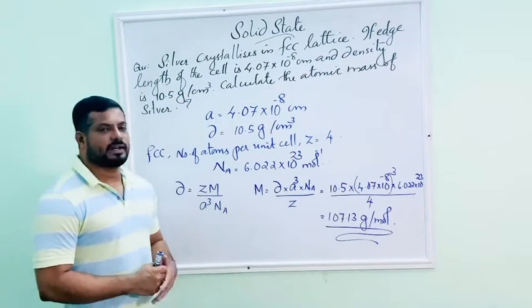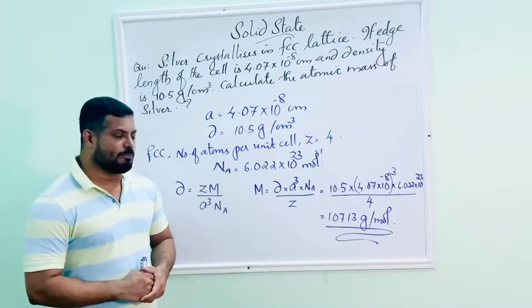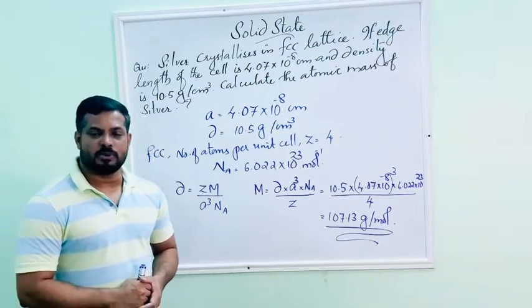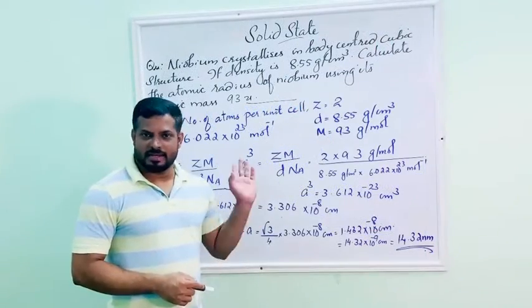So, we will get the final answer: 107.133 into 10 raise to 23. Next problem.